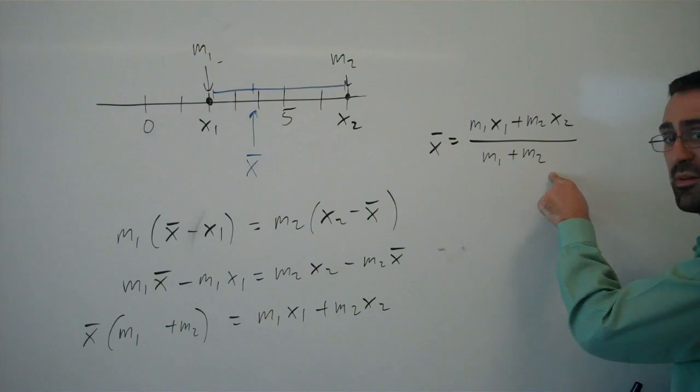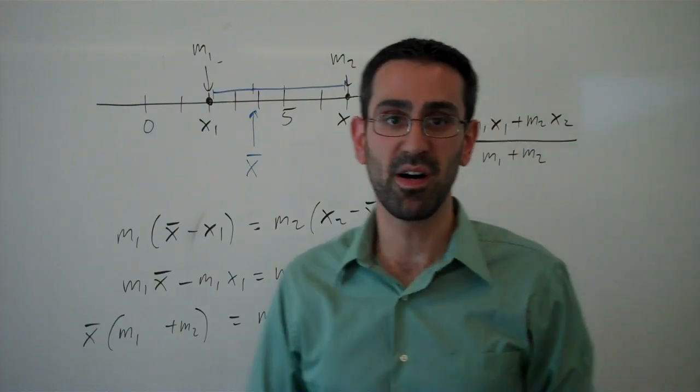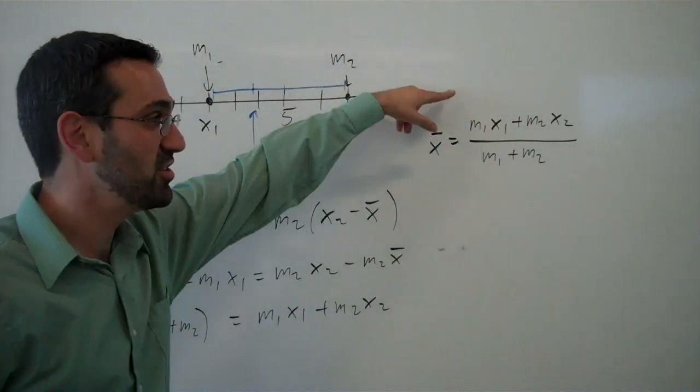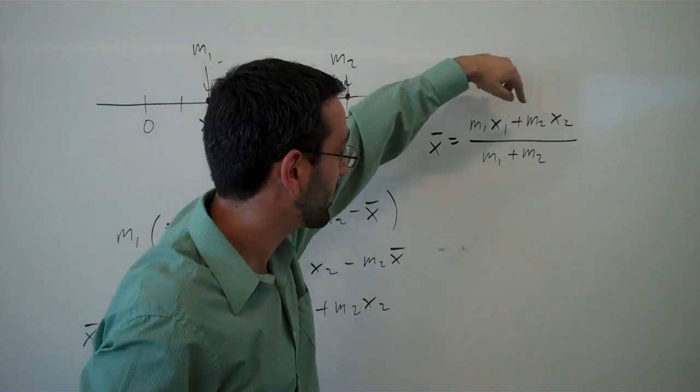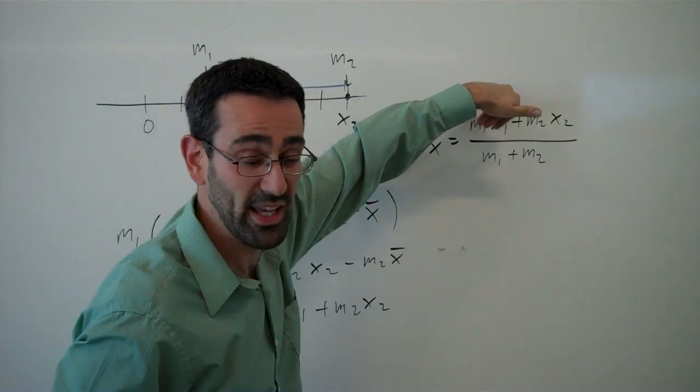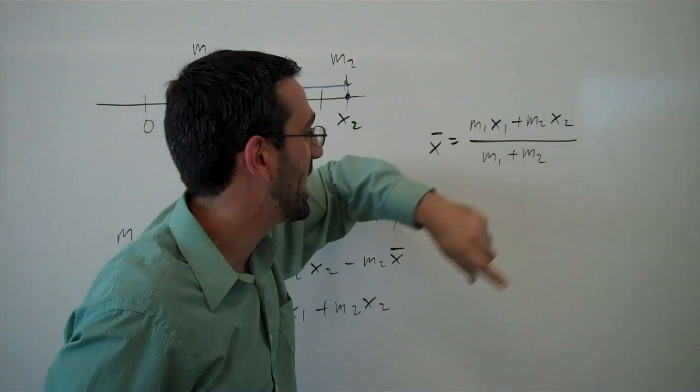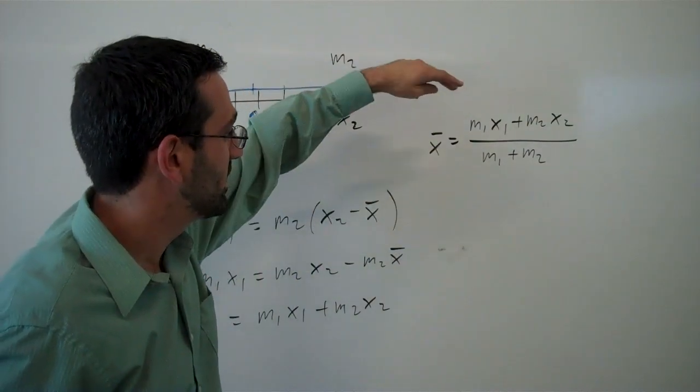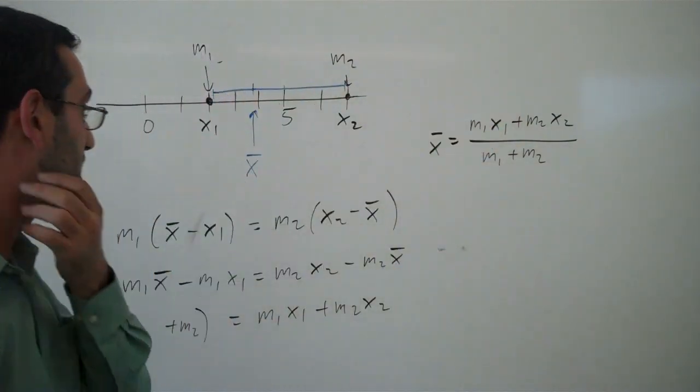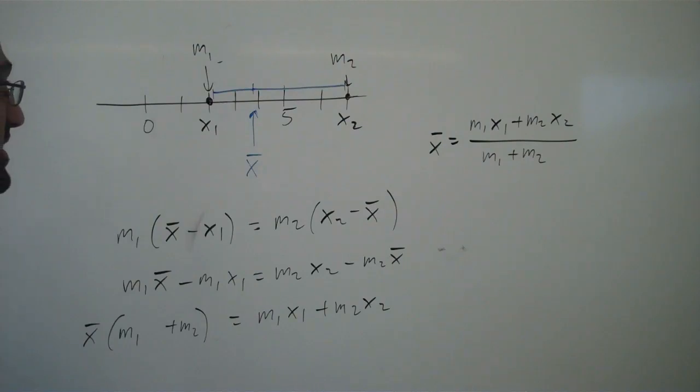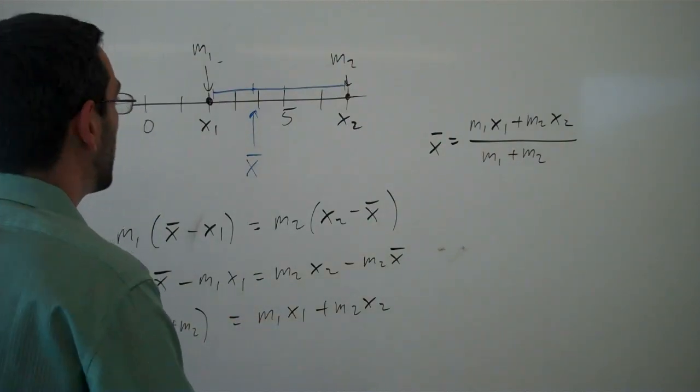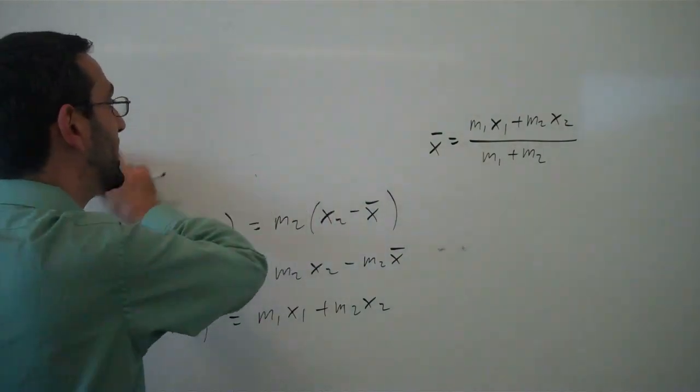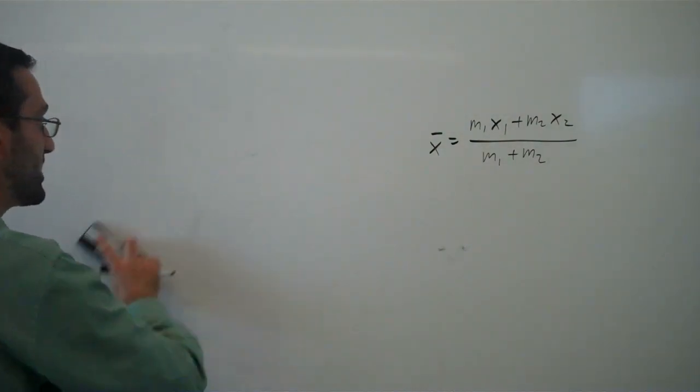Notice in the denominator, we have the sum of the masses. In the numerator, we have something called a moment. It is the product of the mass times the x location added up, and the division of those gives us the center of mass.